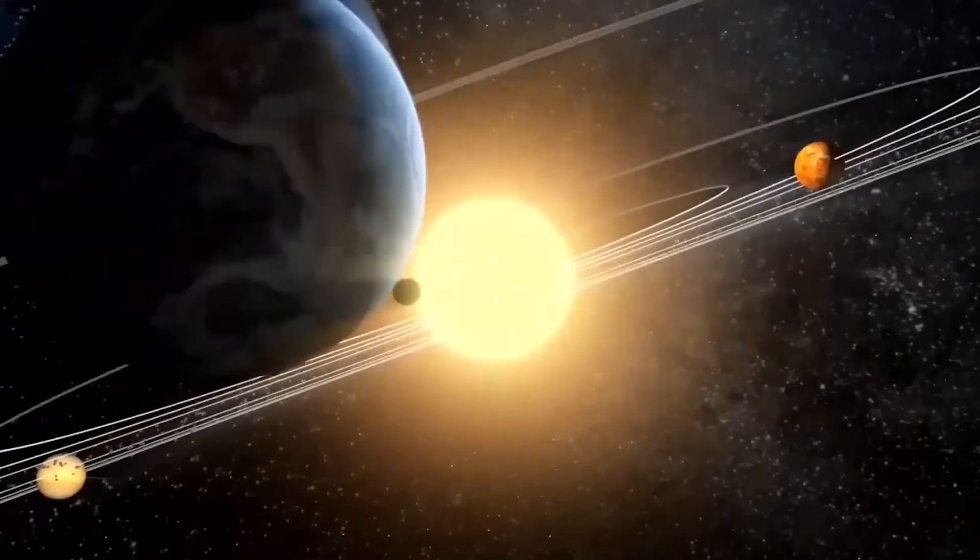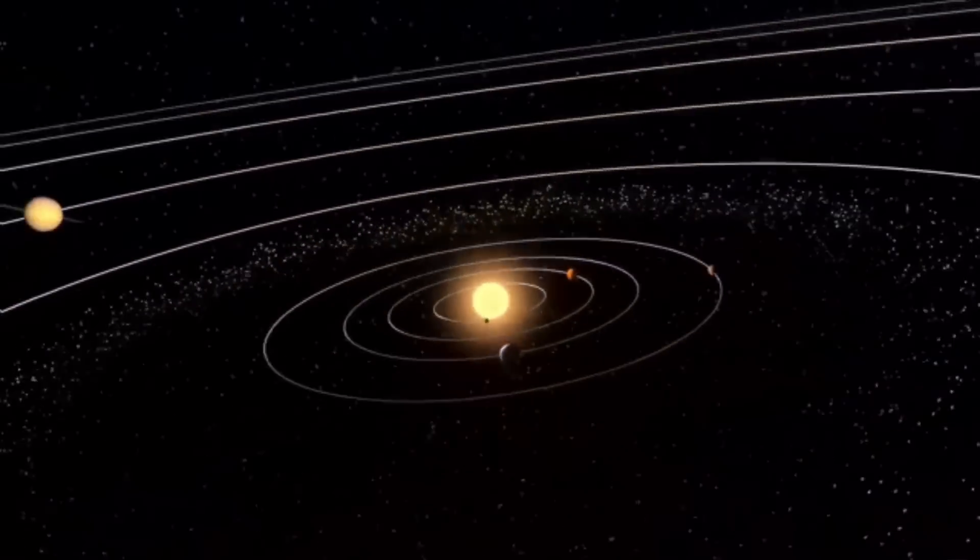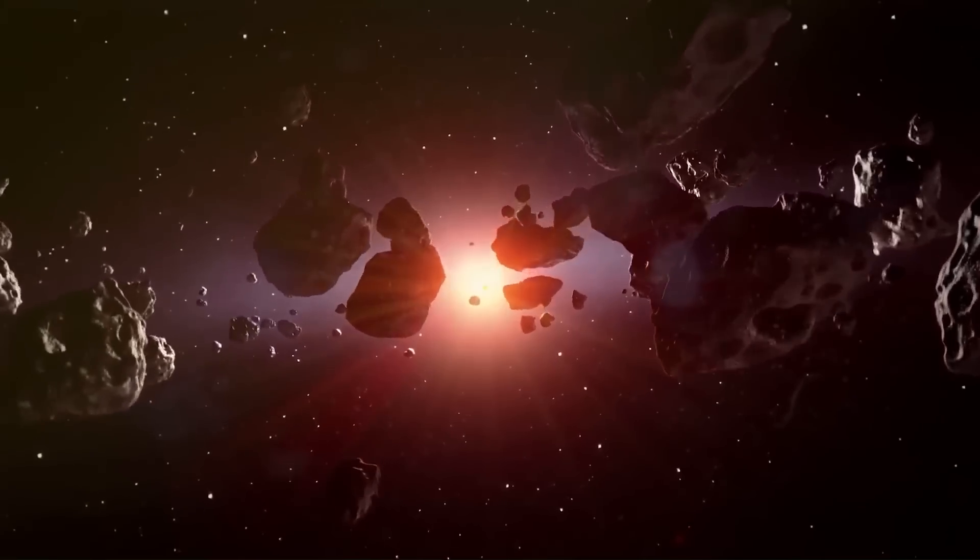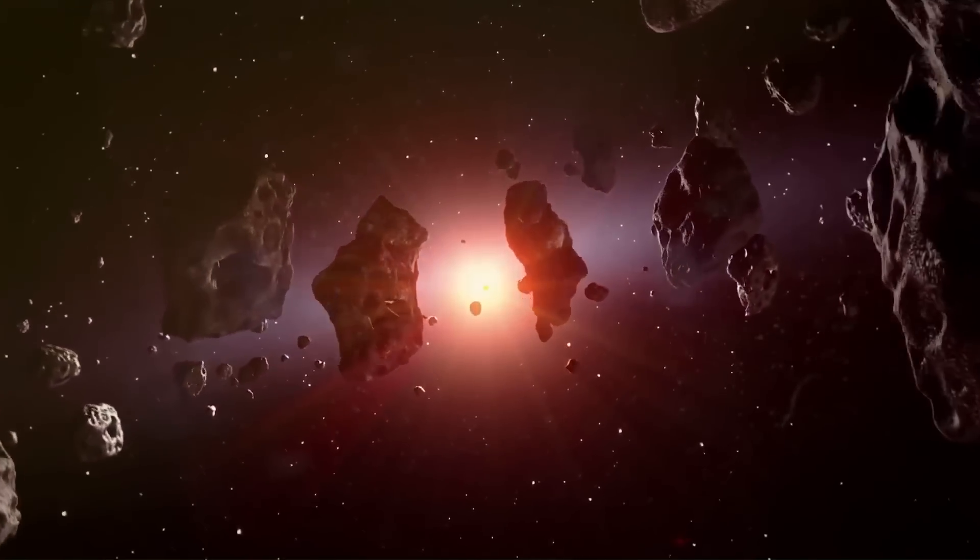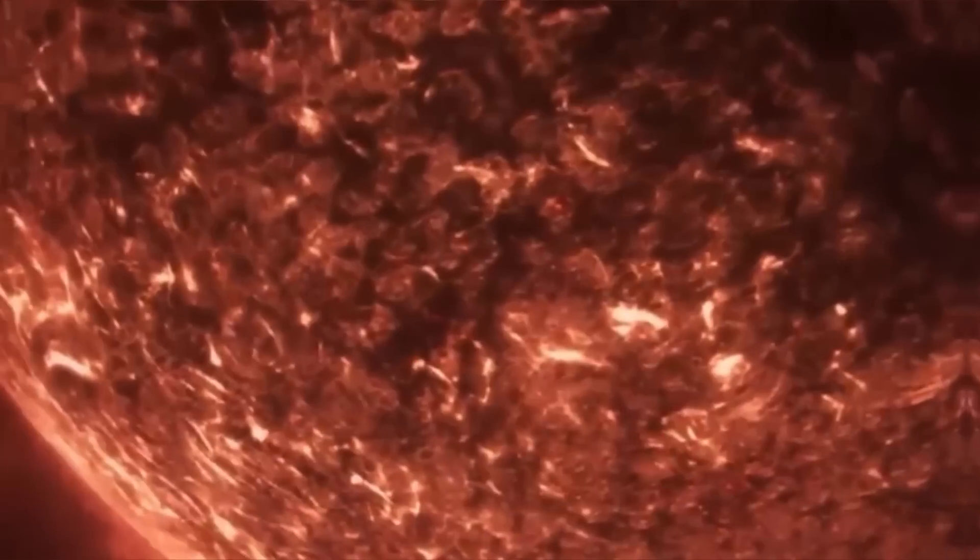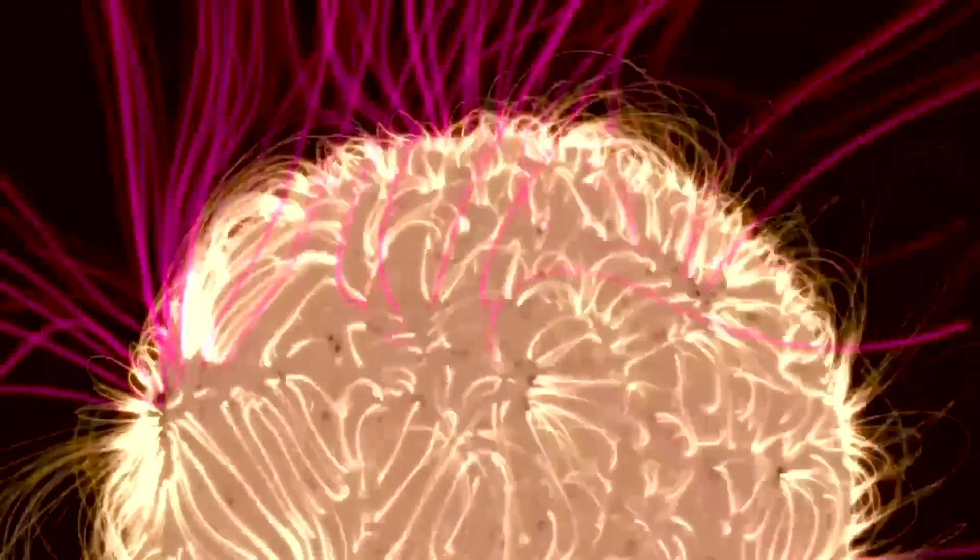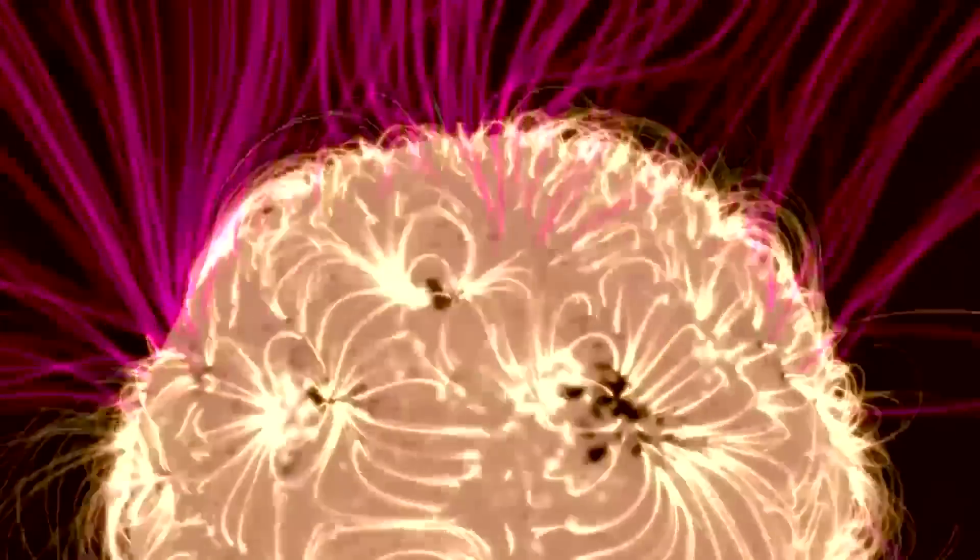For the first time since our solar system was born billions of years ago, a strange space body has gotten past its boundaries, putting our planet and its neighbors at risk of destruction. Could this be one of the many objects floating in near-Earth space, or have our long-speculated interstellar visitors begun surfacing?